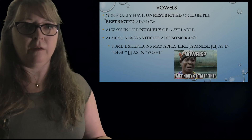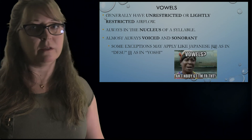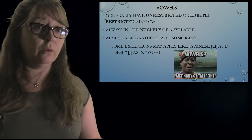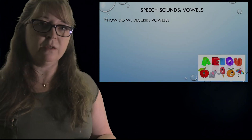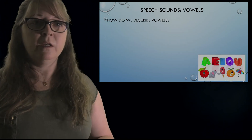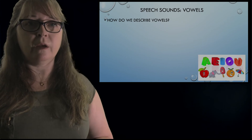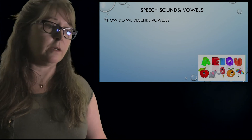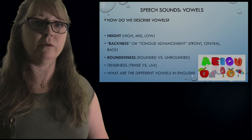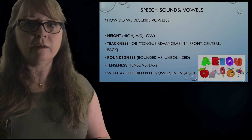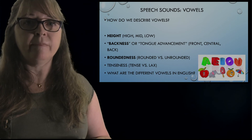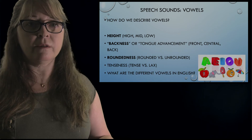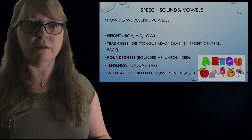The K in 'know' is silent, but we know it's there — that's just history. How do we describe vowels? We just described consonants; now we do vowels. You have height, backness, roundness, and tenseness.